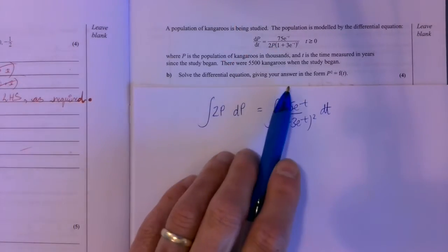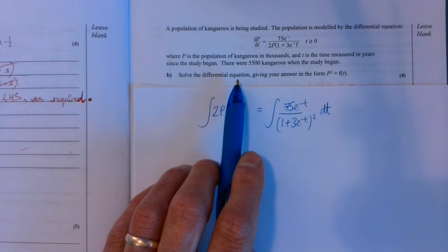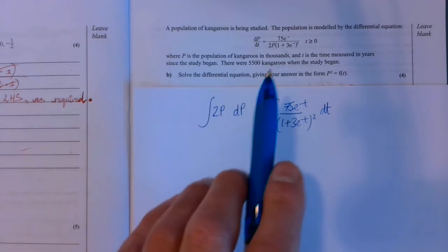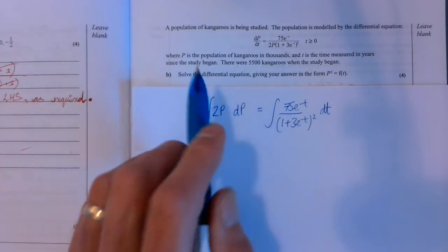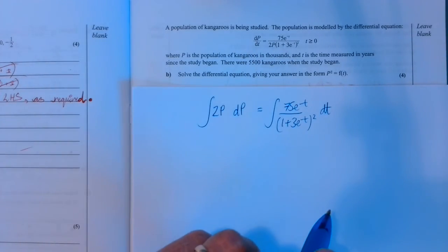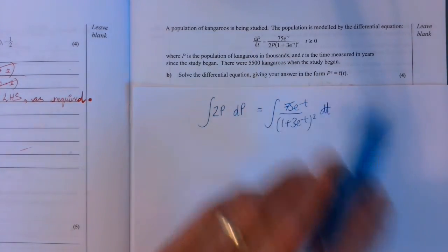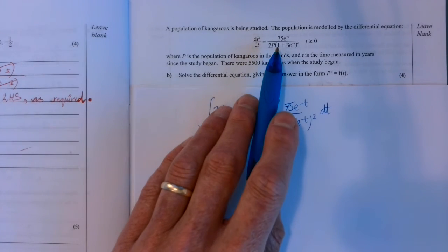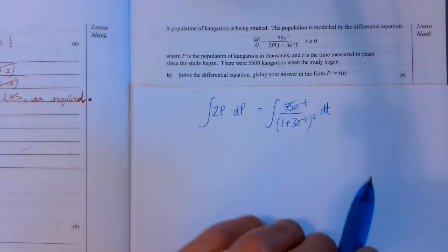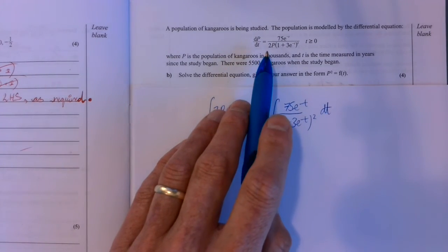So this second part, solve the differential equation. That means integrate this to get a p equals or a t equals function. In fact they want it to be p squared equals. The trouble is we can't just integrate this because it's got p and t in there. So this is one of those ones where you have to separate the variables.